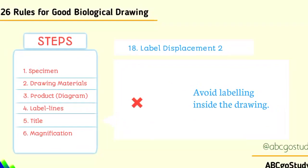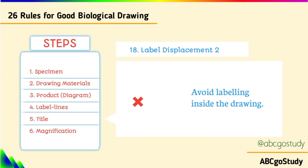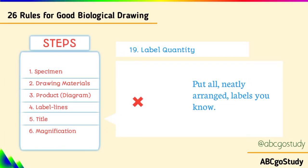Number eighteen, label displacement two: avoid labeling inside the diagram. Some candidates put the guideline and label inside the diagram — that is very, very wrong. Number nineteen, label amount: put as many labels as you know on your drawing, but they must be neatly arranged.